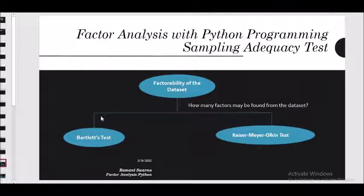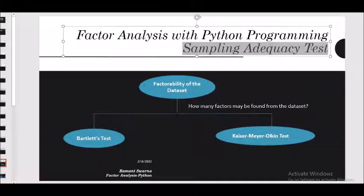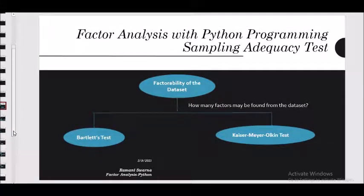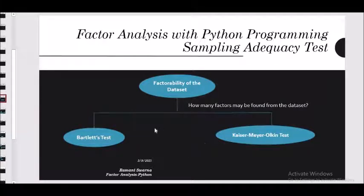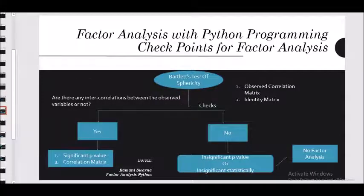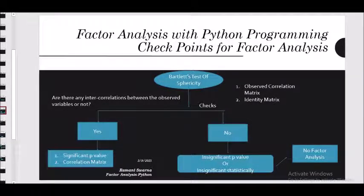There need to be some checkpoints to understand whether this is feasible or not. Factorability of the data set — also called the sampling adequacy test — has two tests: one is the Bartlett's test and the other is the Kaiser-Meyer-Olkin test, also known as the KMO test. In Nidhar Tsar's playlist, the factorability has been explained using SPSS and Jamovi, as well as other softwares.